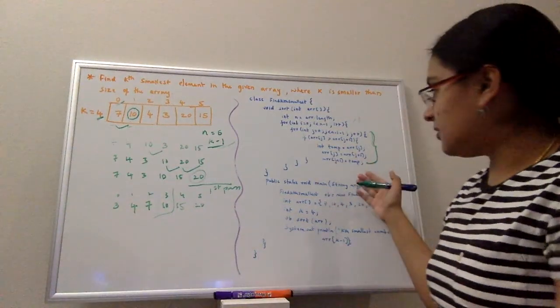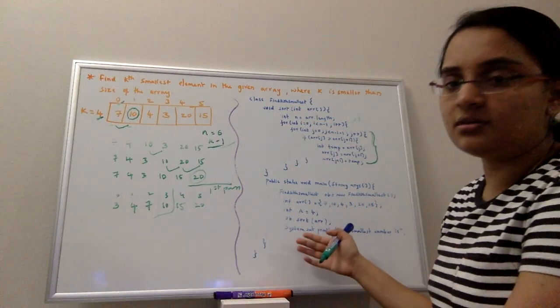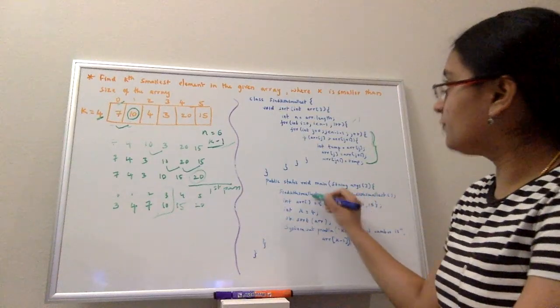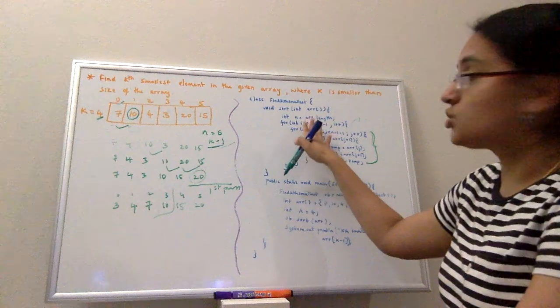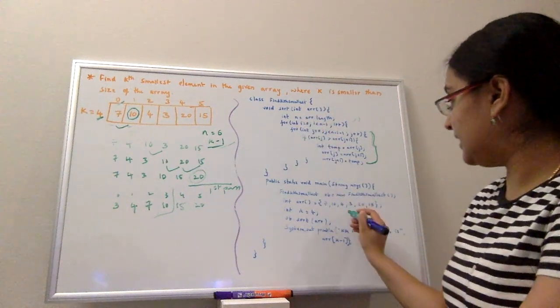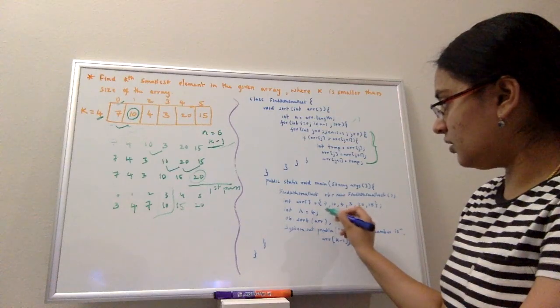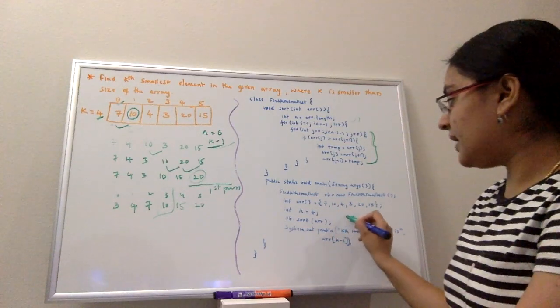So this part of finding out is in the main method where I'm trying to create an object of this find kth smallest class and calling the sort function by passing the array. This was my input array and I'm defining my size as well. Once I sort my array...